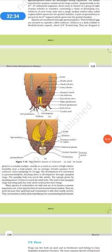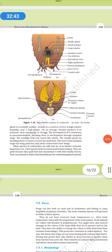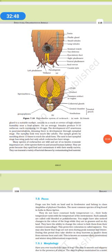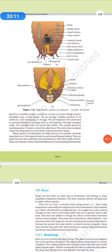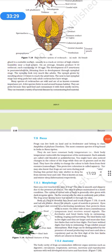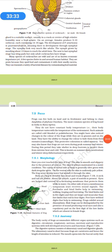The female reproductive system consists of large ovaries lying laterally in the 2nd and the 6th abdominal segments. Each ovary is formed of a group of 8 ovarian tubules or ovarioles containing a chain of developing ova. Oviducts of each ovary unite into a single median oviduct, which opens in the genital chamber. A pair of spermathecae is present in the 6th segment, which opens in the genital chamber. Sperms are transferred through the spermathecae. Fertilized eggs are encased in capsules called ootheca. Ootheca is dark reddish to blackish brown capsules about 3 to 8 millimeters. They are dropped or glued to suitable surface, usually in a crack or crevice of high relative humidity near the food surface. On the average, females produce 9 to 10 ootheca, each containing 14 to 16 eggs. The development of P. americana is paurometabolous, meaning the development has nymphal stage. The nymphs look like adults. The nymphs grow by moulting about 13 times to reach the adult. Many species of cockroach are wild and are of no known economic importance. A few species thrive in and around human habitat. So they are basically the pests and they transmit diseases.